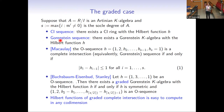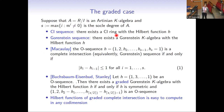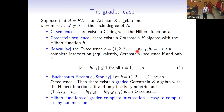By a CI sequence, I mean a complete intersection sequence — a numerical sequence h such that there exists a complete intersection algebra with Hilbert function h. Similarly, by a Gorenstein sequence, I mean a numerical sequence which is realizable for a Gorenstein k-algebra.